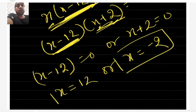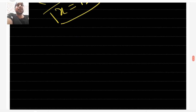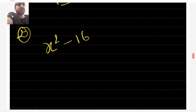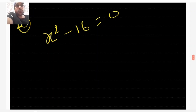Let's take another example so that you may understand it better. The question is x² - 16 = 0. Now this is a quadratic equation and it should always have two solutions. So you are going to first factorize this.